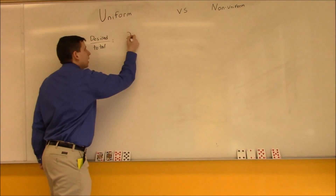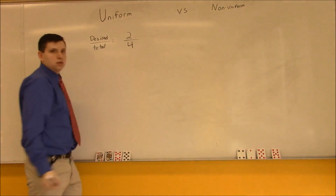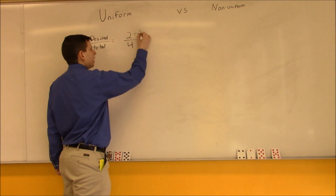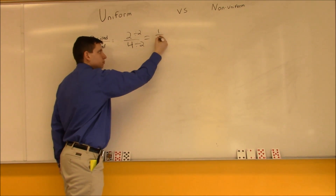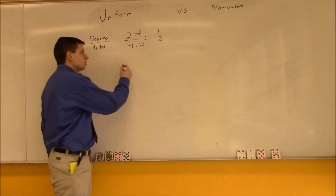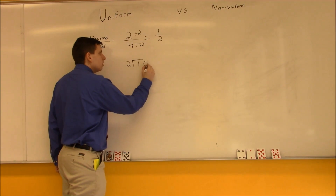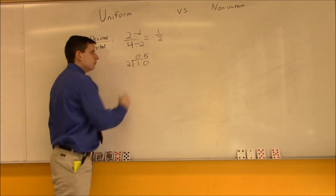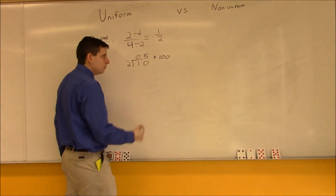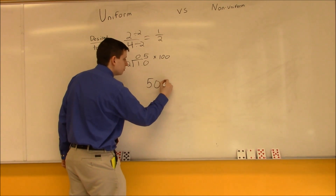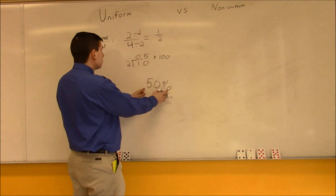My denominator is four because there are four cards in total. I can simplify this fraction by dividing both by two, and that equals one over two. I can also express this as a decimal: two goes into one giving 0.5. I can take that 0.5 and multiply it times 100 to find the percent, which is 50 percent.